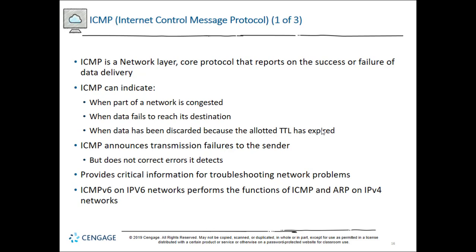ICMP — Internet Control Message Protocol — is a network layer core protocol that reports success or failure in delivery. It's the response you get back when you do a ping or NS lookup. It doesn't troubleshoot for you — it's just a reporting mechanism. It tells you what part of the network might have an issue and whether data reached its destination, but it only detects errors, it doesn't correct them.